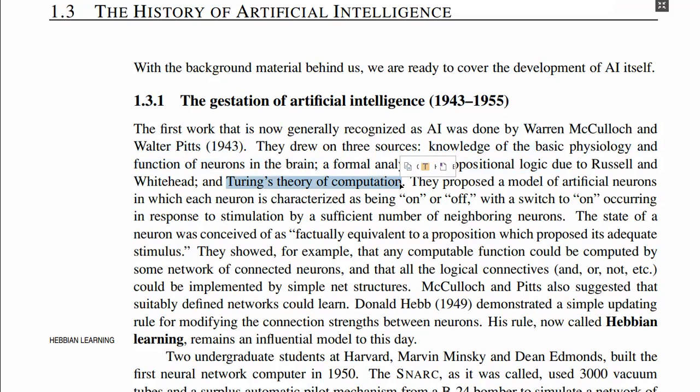Based on these three sources — psychology and the basic functionality of the neuron in the human brain, ideas from the field of propositional logic, and ideas proposed by Alan Turing — taking ideas from these three domains, they proposed the model of the artificial neuron. They proposed that a neuron can be characterized as being on or off based on the stimulus or the input from the neighboring neurons, and that a neuron can behave as a switch that could achieve a state out of two possible states.